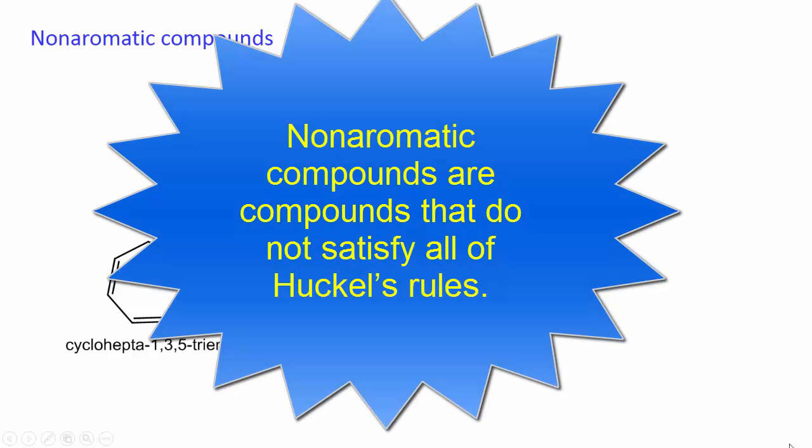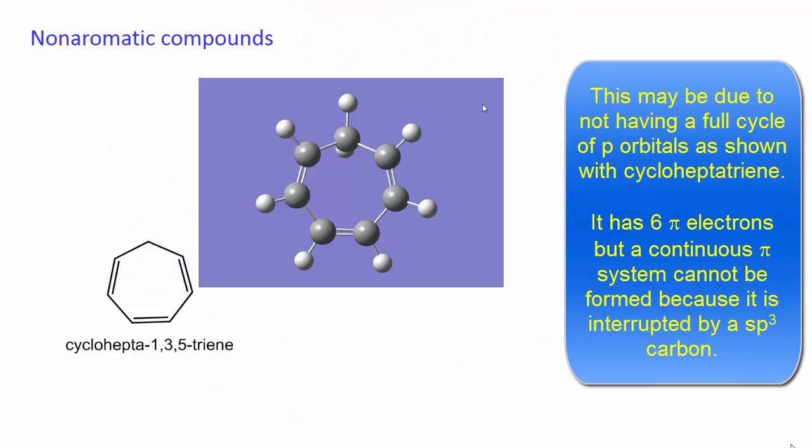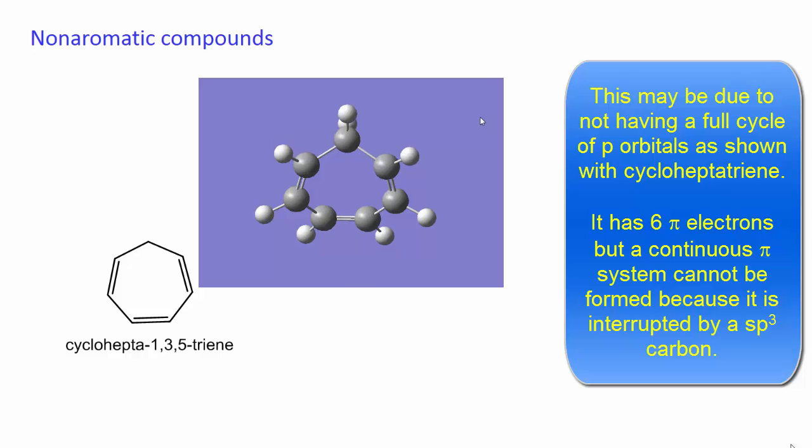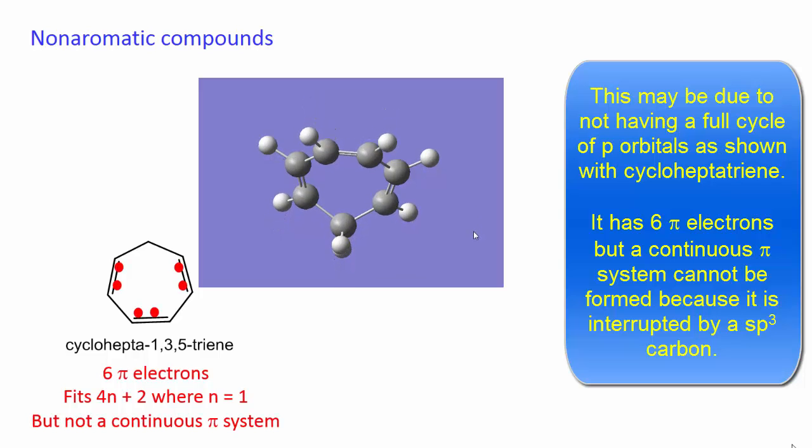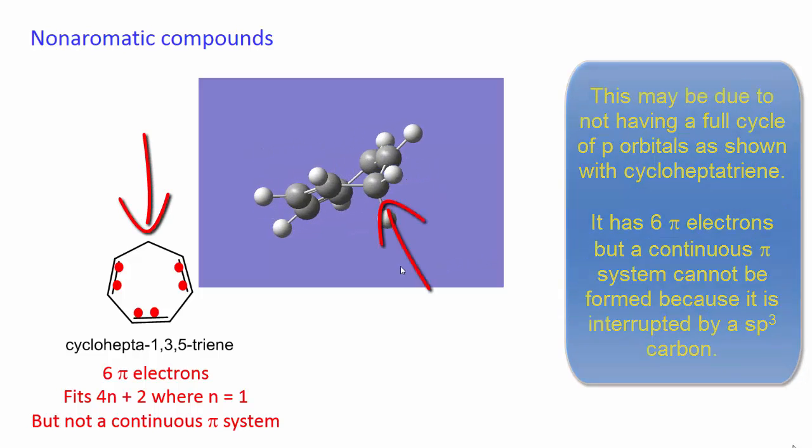Non-aromatic compounds are compounds that do not satisfy all of Huckel's rules. This may be due to not having a full cycle of p orbitals, as shown with cycloheptatriene. It has 6 pi electrons, but a continuous pi system cannot be formed because it is interrupted by an sp3 carbon.